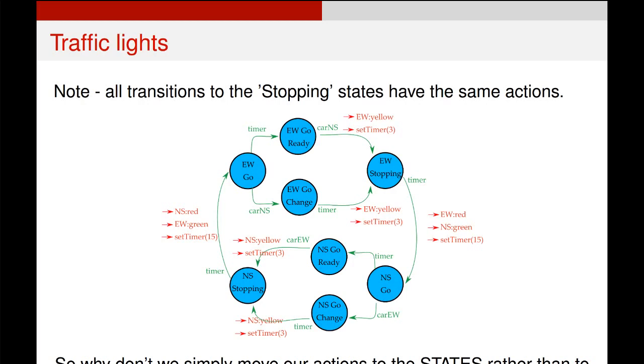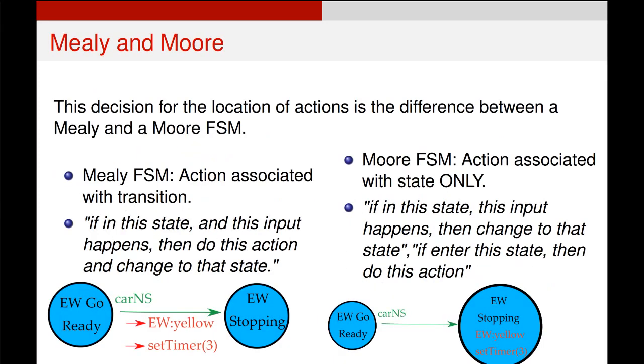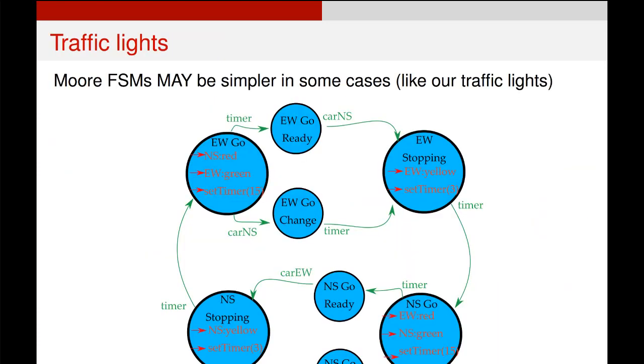And what we have with this current version of the traffic lights is that the Moore finite state machines are simpler when the actions are attached to the state. A Moore finite state machine of this might look like this, and you can see we've taken all those transitions and we've put them directly on the states themselves.